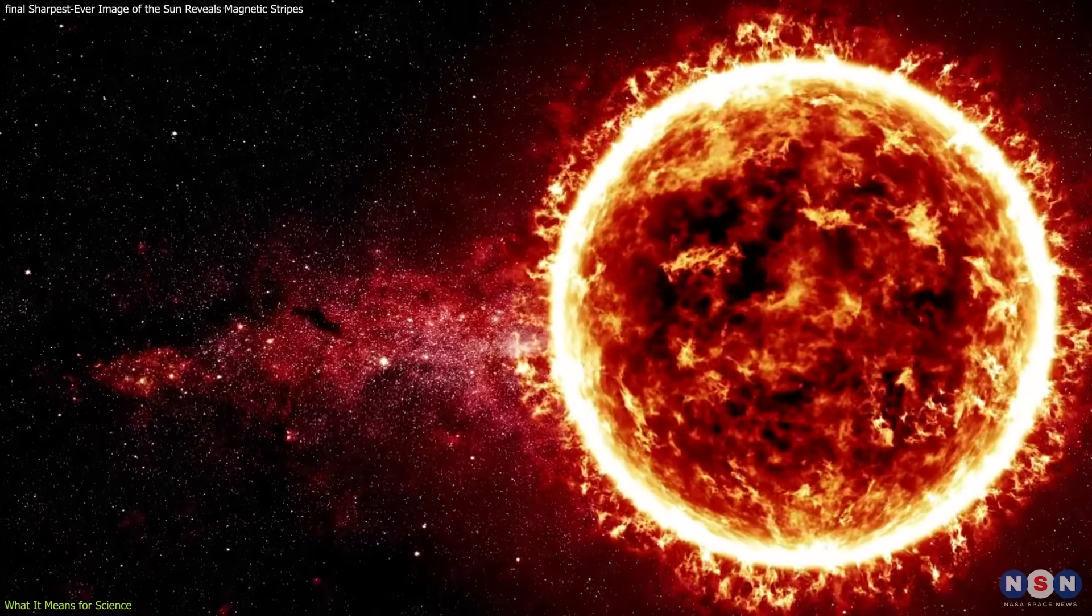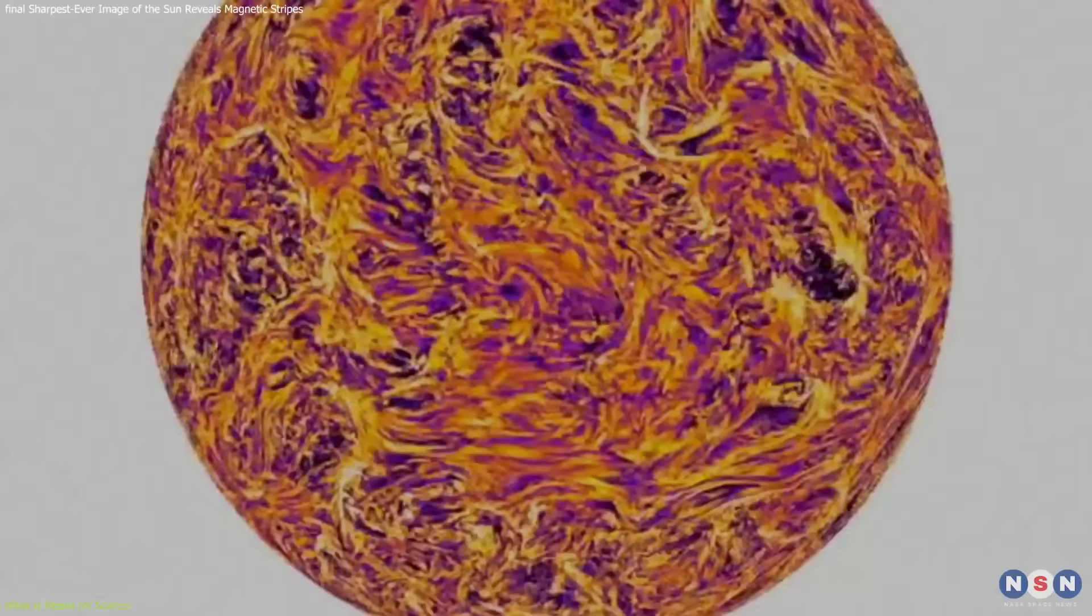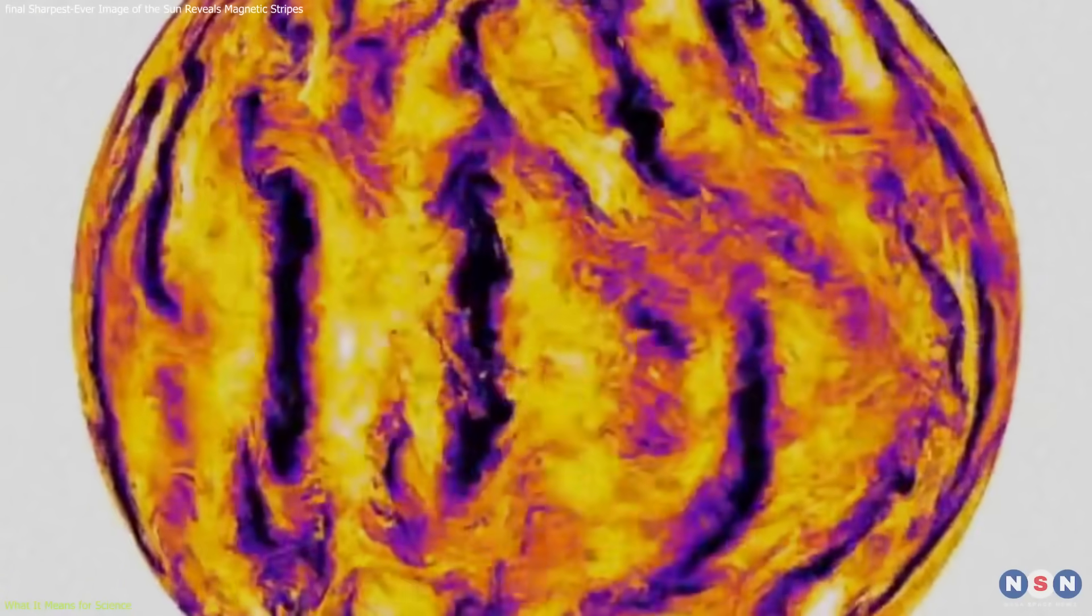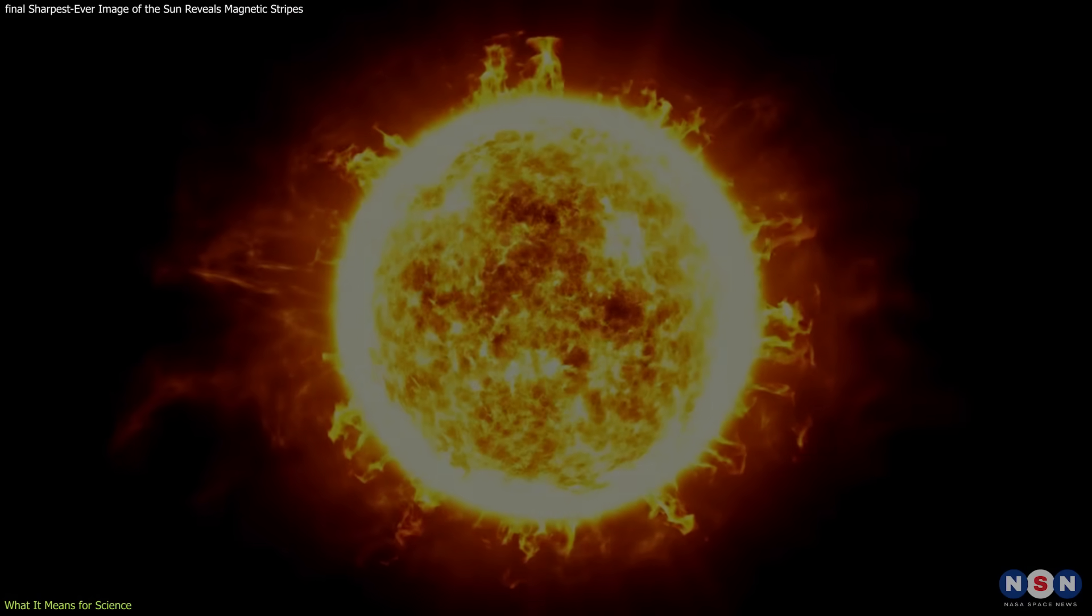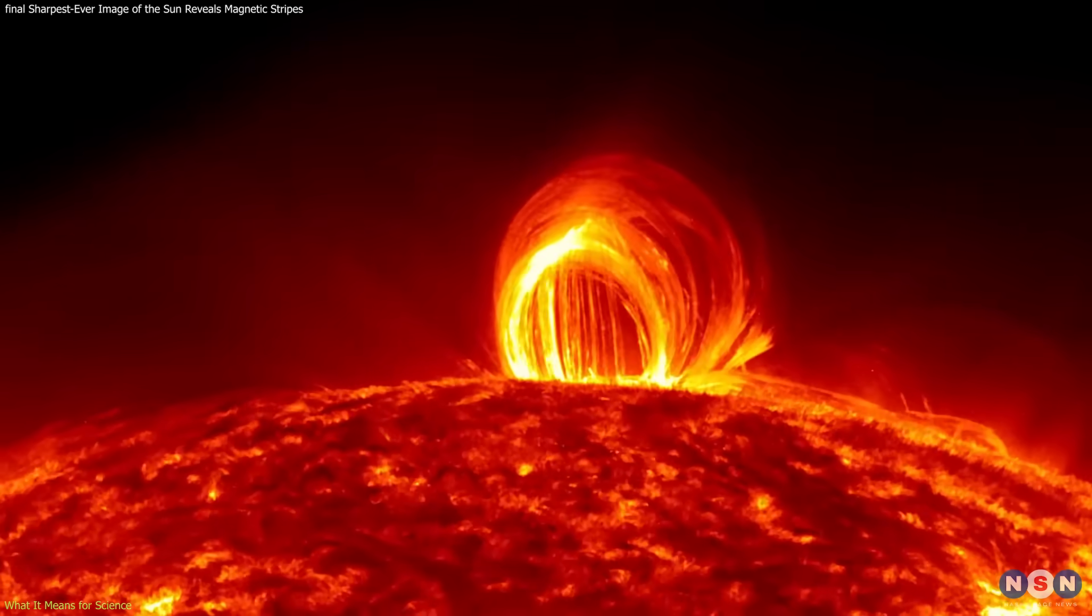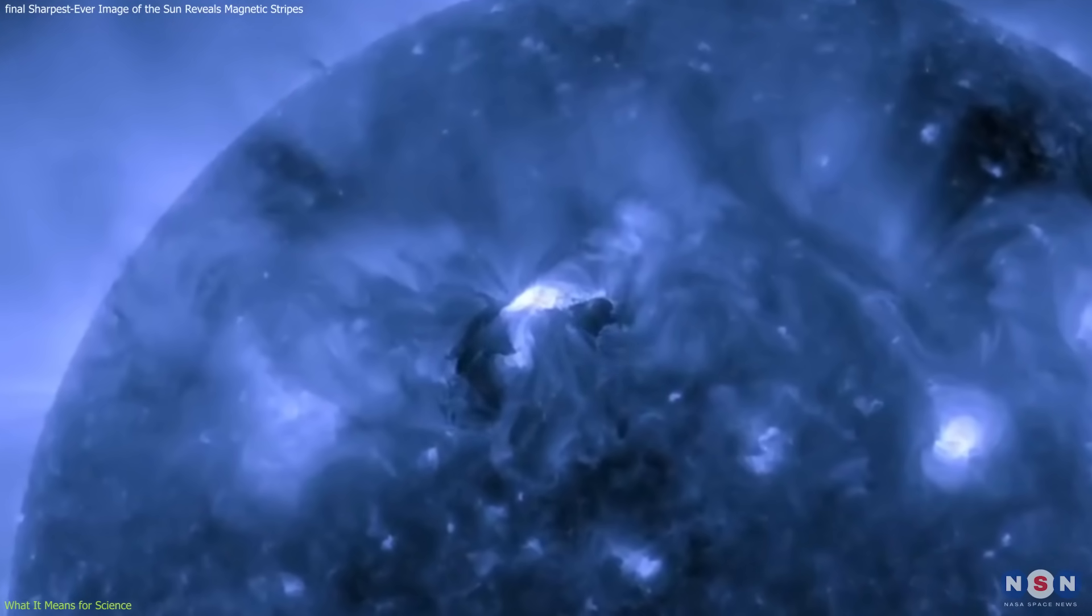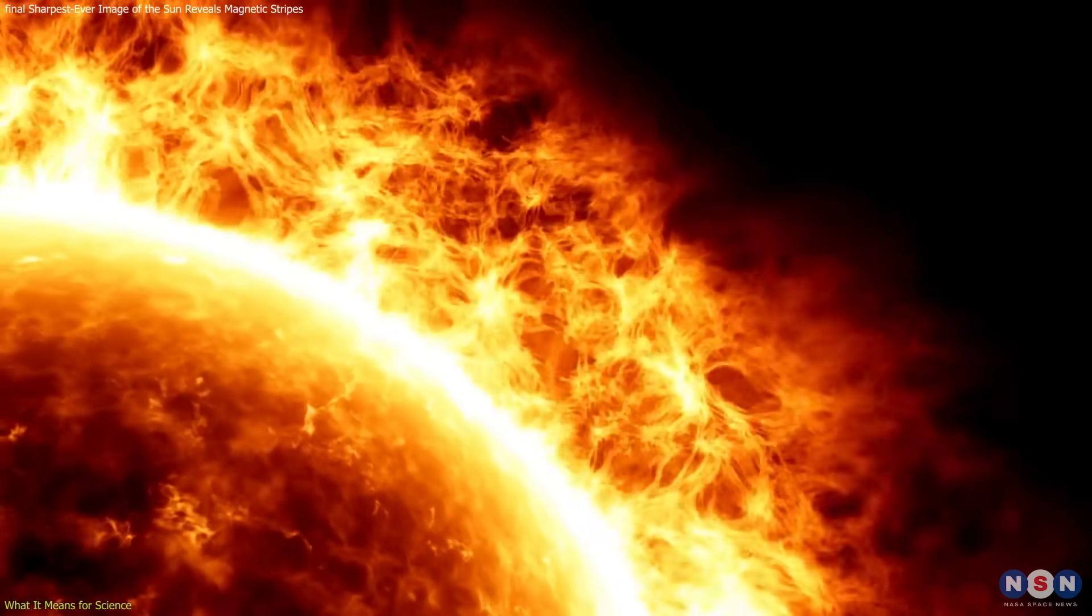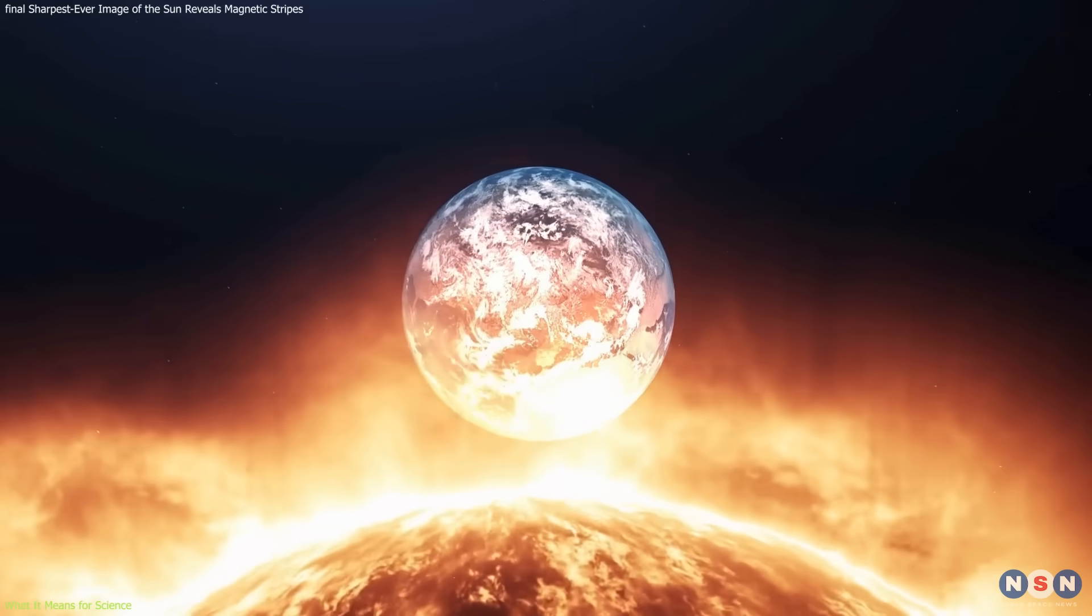This lends new confidence to solar models used in research and forecasting. These validated models can now be refined further. They help us understand not just surface brightness changes, but also energy transport, magnetic reconnection, and wave generation—all of which are involved in the heating of the solar atmosphere and the origin of space weather events.